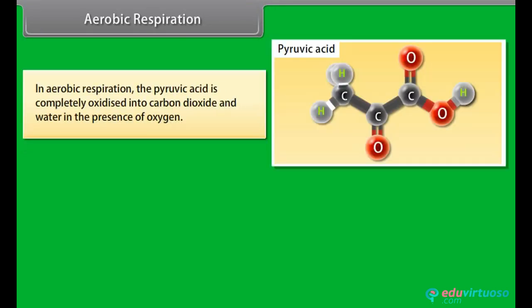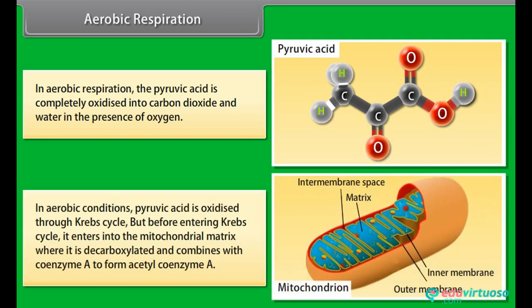In aerobic respiration, the pyruvic acid is completely oxidized into carbon dioxide and water in the presence of oxygen. In aerobic conditions, pyruvic acid is oxidized through Krebs cycle. But before entering Krebs cycle, it enters into the mitochondrial matrix where it is decarboxylated and combines with coenzyme A to form acetyl coenzyme A.